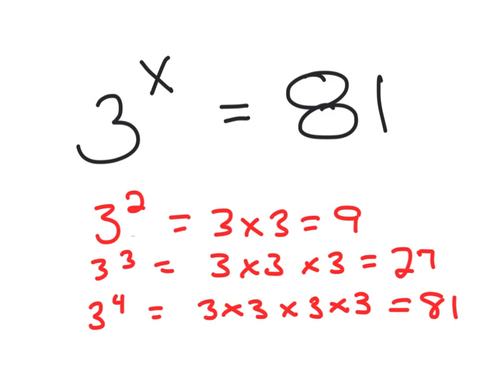And next I did 3 to the fourth: 3 times 3, which is 9, times 3 times 3, which is 9, gives me my 81.